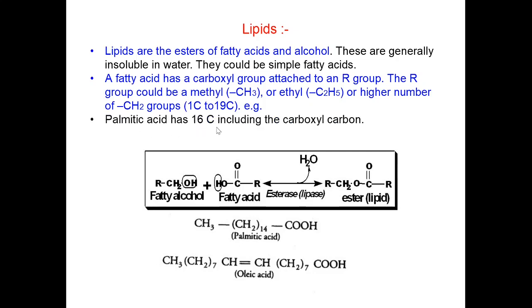For example, palmitic acid has 16 carbons including the carboxyl carbon. This is the palmitic acid here and we have 16 carbons including carboxyl carbon. Next is arachidonic acid. It has 20 carbon atoms including carboxyl carbon whereas this is the oleic acid which has 18 carbon including carboxyl carbon.